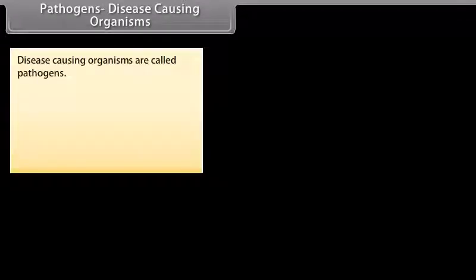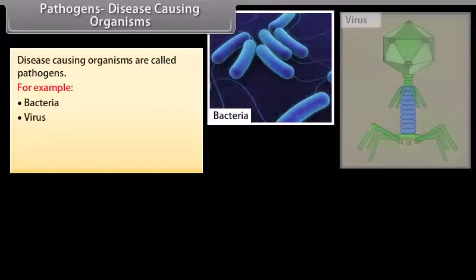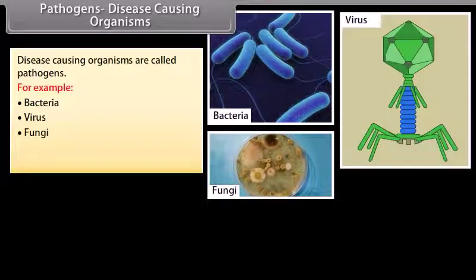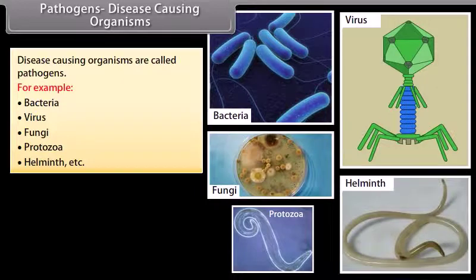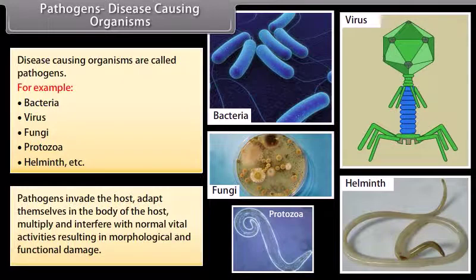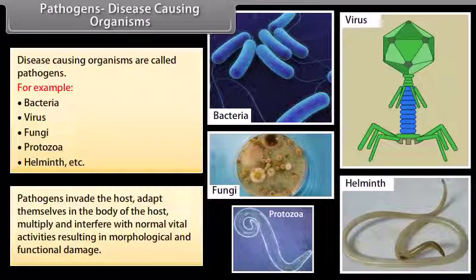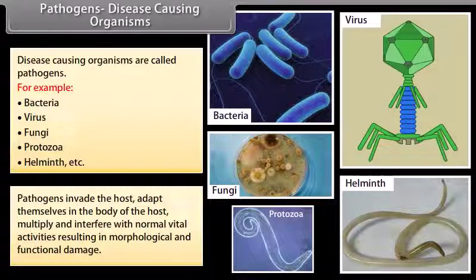Disease-causing organisms are called pathogens. For example, bacteria, viruses, fungi, protozoans, helminths, etc. Pathogens invade the host, adapt themselves in the body of the host, multiply, and interfere with normal vital activities, resulting in morphological and functional damage.